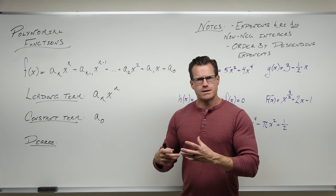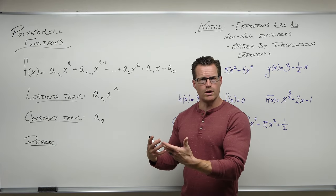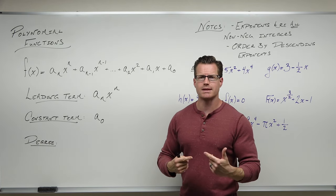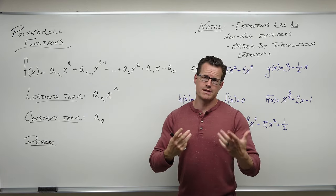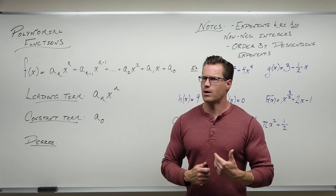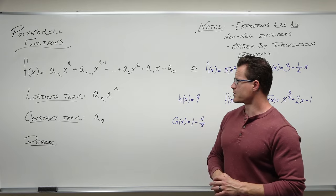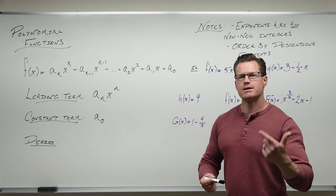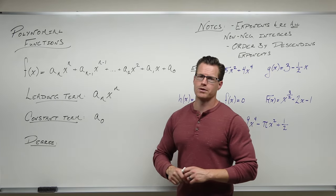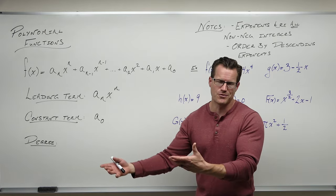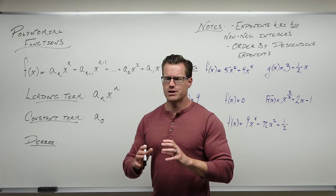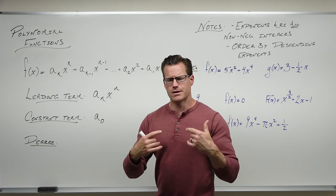Now, the degree. Our degree is the largest exponent that appears in your polynomial. It should always be the exponent of your leading term because that's the term with the biggest power. So our degree here is N — it's just the largest power included in your polynomial. What you don't do is add up all your exponents. Just look at your leading term, pick out the biggest exponent you see — it should be in your leading term, otherwise it's out of order — and that is your degree.